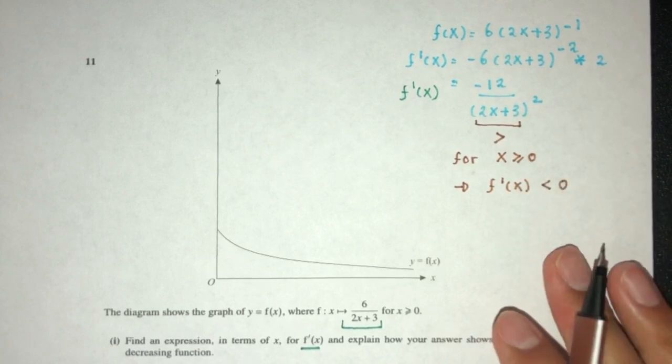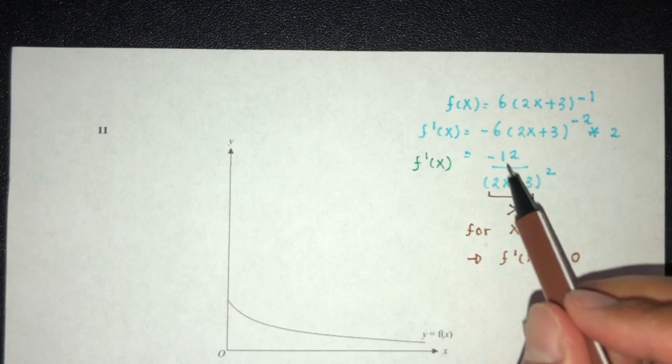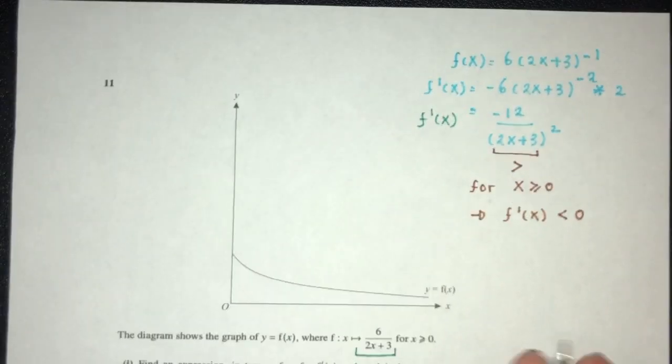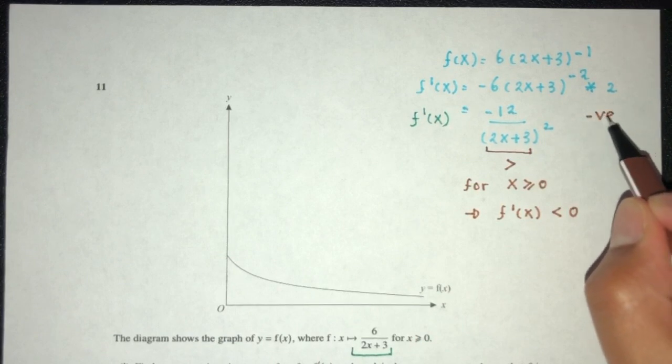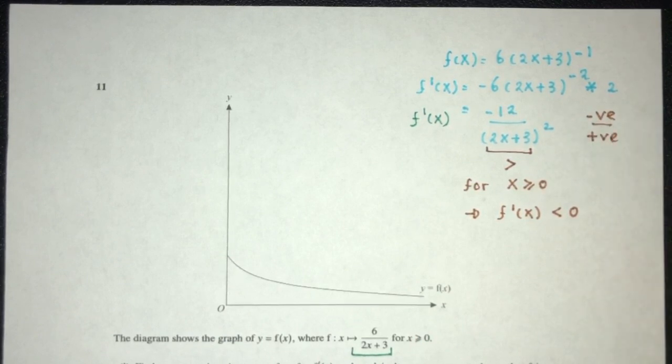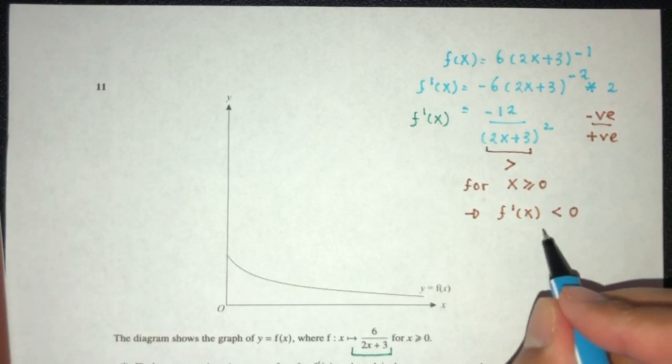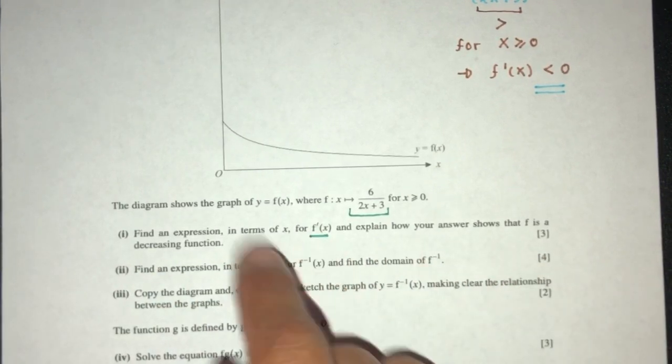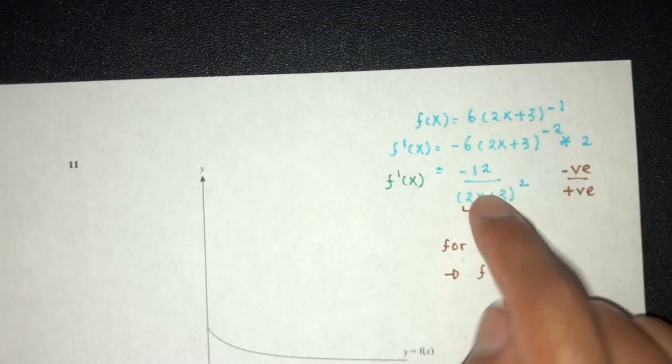Why is that? Because minus 12 divided by something positive will be negative. Negative divided by positive will give you something negative no matter what. In that case, it is going to be a decreasing function. That will be the reason why it's decreasing.